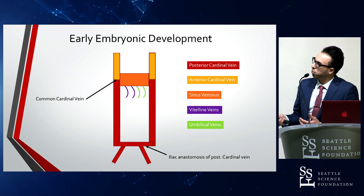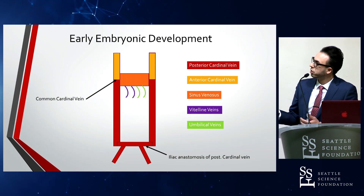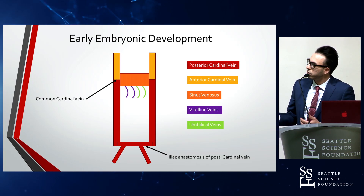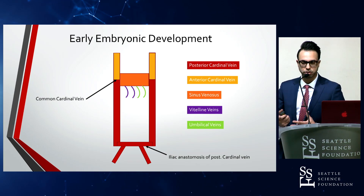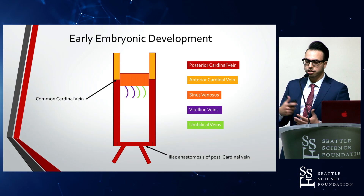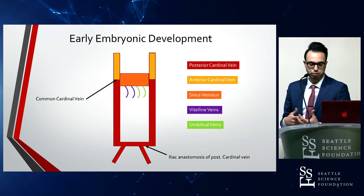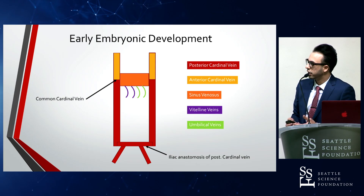In early embryonic development, we have the posterior cardinal veins illustrated in red, and in yellow the anterior cardinal vein. Where they join together, you have the common cardinal vein, which drains into the sinus venosus — the primitive heart. Later in development, it will become attached to the right atrium and serve to form the coronary sinus.